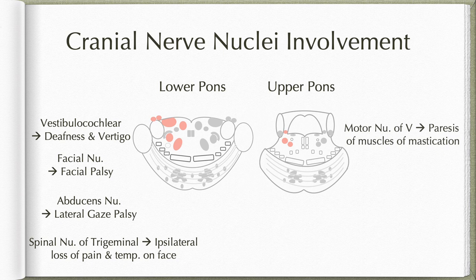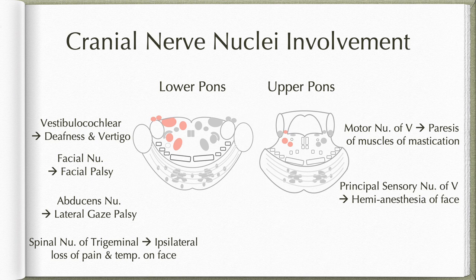If the lesion is at the upper level of the pons, the motor nucleus of the trigeminal nerve may be involved, resulting in paresis of the muscles of mastication on that side. The principal sensory nucleus of the trigeminal nerve may be involved, resulting in hemi-anesthesia of the face for touch and pressure sensations. The mesencephalic nucleus of the trigeminal nerve may be involved, resulting in absence of the jaw jerk.